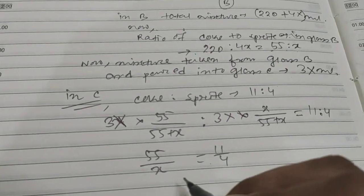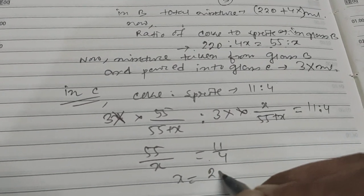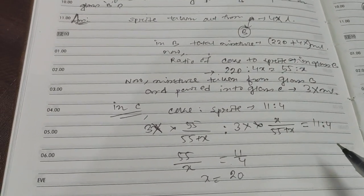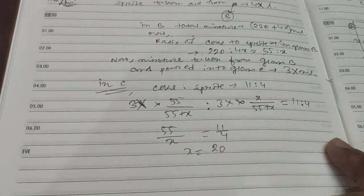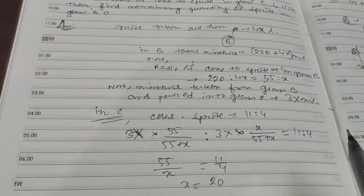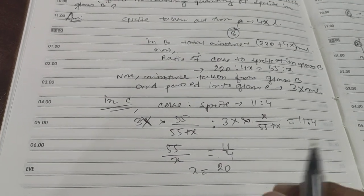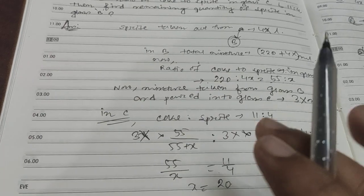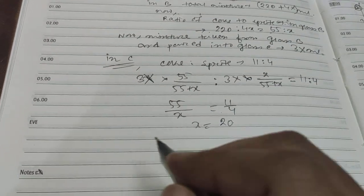So this is 11:4, and now x is equal to 20. When sprite is taken out from glass B, initially 4x ml sprite was there in glass B.